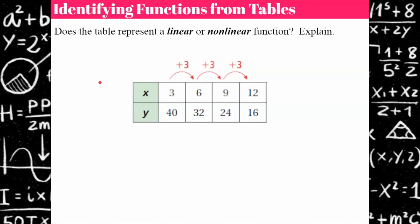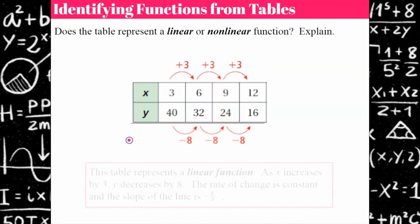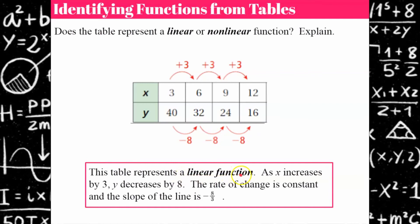Welcome back. x is increasing by 3 as y is decreasing by 8. So this table represents a linear function, since as x increases by 3, y decreases by 8. That tells us the rate of change is constant. The slope of this line would be negative 8 over 3, or negative 8 thirds. So this is a linear function, seeing as it has a constant rate of change.